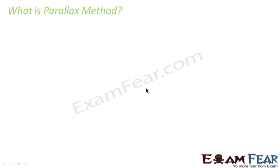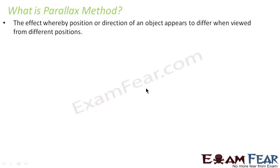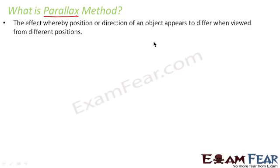Now we will discuss the parallax method in detail. What is the parallax method? Before we discuss what this method is all about, we should first know what the word parallax means. The effect whereby the position or direction of an object appears to differ when viewed from different positions. When I say parallax, it means that we are viewing the same object but from two different positions.